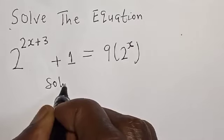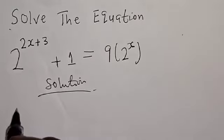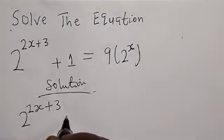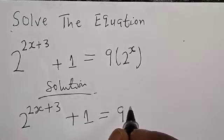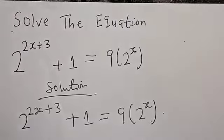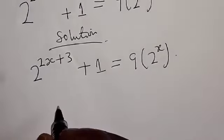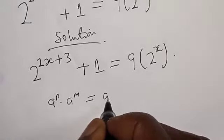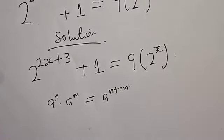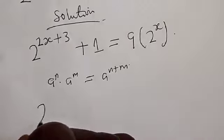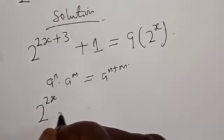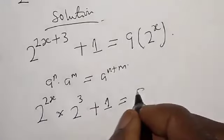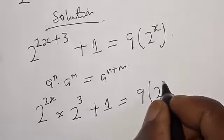We have the given equation: 2 raised to power 2s plus 3 plus 1 is equal to 9 into 2 raised to power s. Remember, if you have a raised to power n multiplied by a raised to power m, that is the same as a raised to power n plus m. Therefore, our equation becomes 2 raised to power 2s multiplied by 2 raised to power 3, plus 1, is equal to 9 into 2 raised to power s.